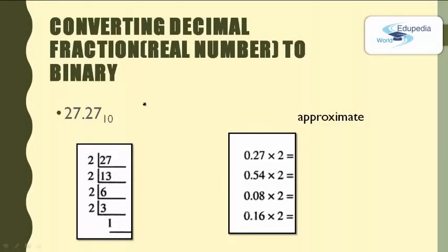Here is another example: 27.27. First take the integer part. 27÷2: quotient 13, remainder 1. 13÷2: quotient 6, remainder 1. 6÷2: quotient 3, remainder 0. 3÷2: quotient 1, remainder 1. Writing in reverse order: 11011. This is the binary representation of the integer value 27.